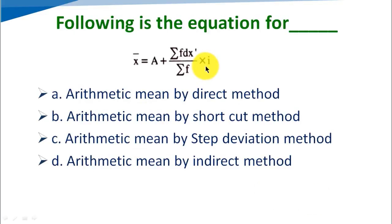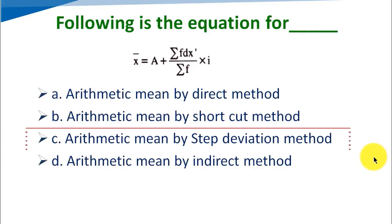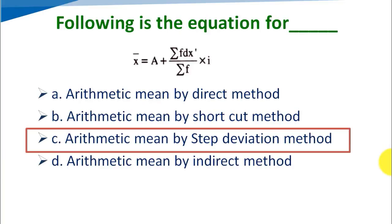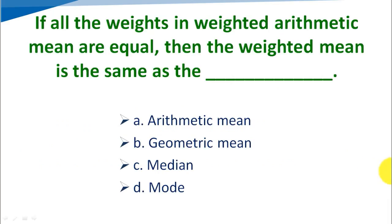The following equation — x̄ = A + (Σf·dx / Σf) × i — belongs to which method? Option A: arithmetic mean by direct method, Option B: arithmetic mean by shortcut method, Option C: arithmetic mean by step deviation method, Option D: arithmetic mean by indirect method. The correct answer is C, arithmetic mean by step deviation method.